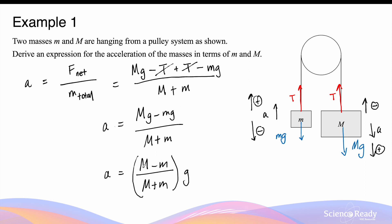We can better understand this expression for acceleration by assuming that one of the masses is zero — that is, if the system only had one of the masses. If small m is zero, then the numerator and denominator both become capital M, so M/M times g, which is simply equal to g. In other words, if the system has only one mass, the acceleration equals the gravitational acceleration, 9.8 meters per second squared.